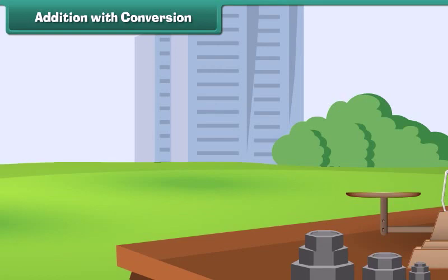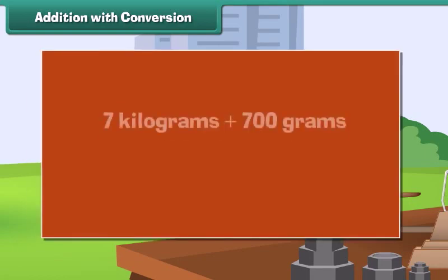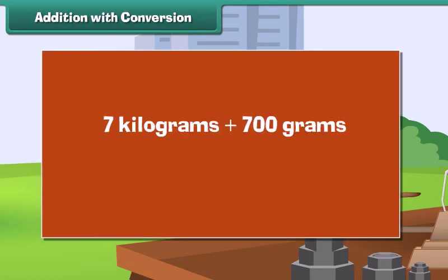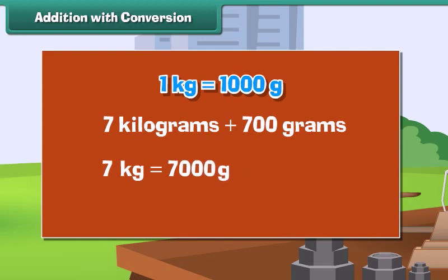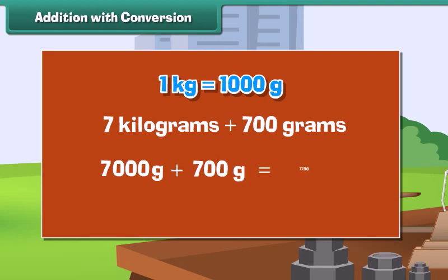Addition with conversion. Let us now add 7 kilograms with 700 grams. Let us first convert kilograms into grams. 1 kg is equal to 1000 grams. So, 7 kg is equal to 7 into 1000 grams, which equals 7000 grams. 7 kg plus 700 grams is equal to 7000 grams plus 700 grams, which equals 7700 grams.